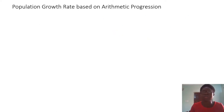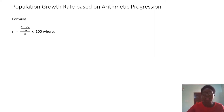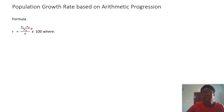Now let us see how population growth rates are calculated based on arithmetical progression. We have a formula: R equals (Pt minus P0) over P0, times 100. The P0 here is the initial year — the current year. Let's see the interpretation.